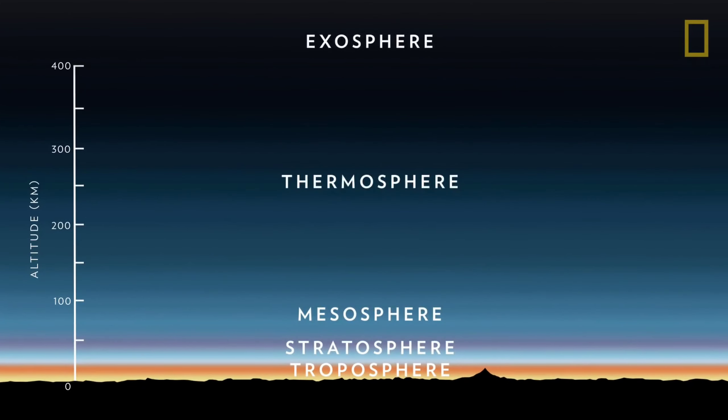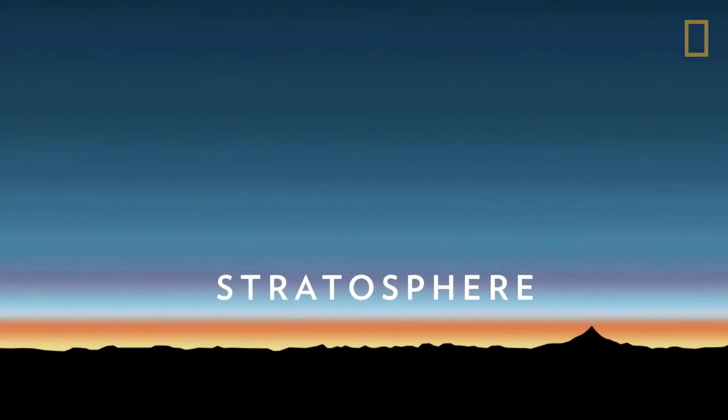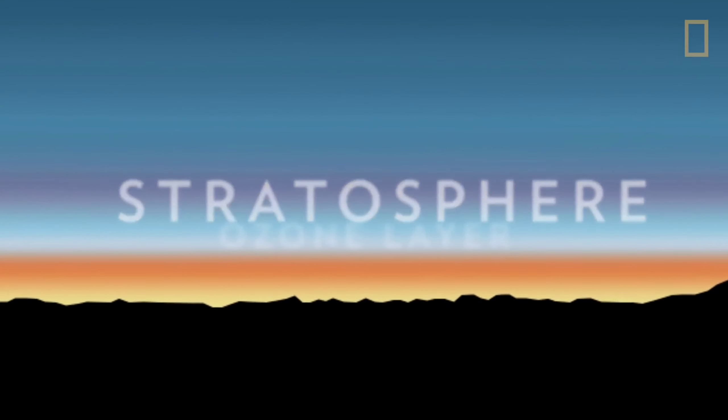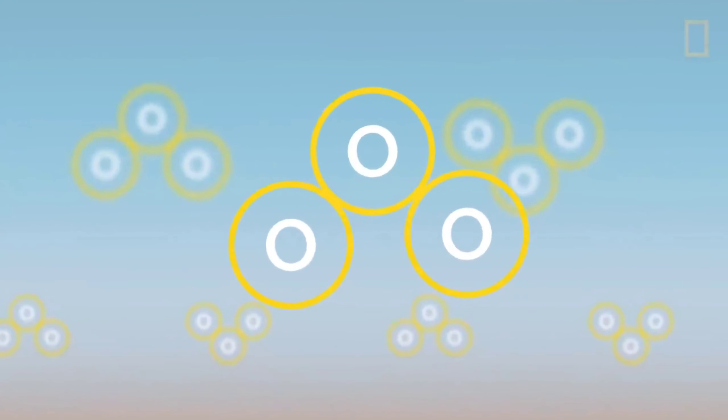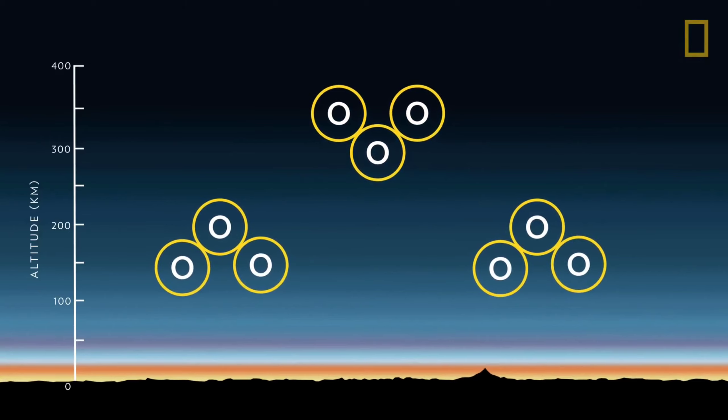Ozone is only a trace of gas in the atmosphere. Only about three molecules for every 10 million molecules of air. But it performs an important function. Like a sponge, the ozone layer absorbs bits of radiation hitting earth from the sun. Even though we need some of the sun's radiation to live, too much of it can damage living things.